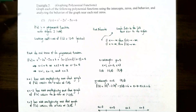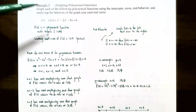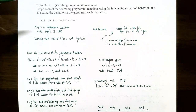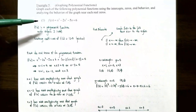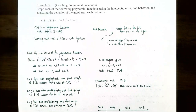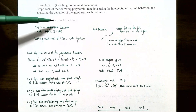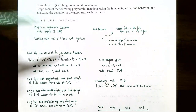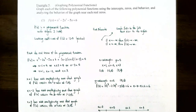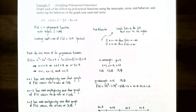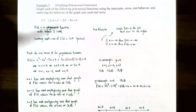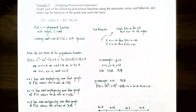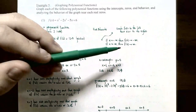Example five: graph f(x) = x³ - 2x² - 5x + 6. First, find the end behavior. The leading term is x³, so the degree is three (odd) and the leading coefficient is one (positive). The ends of the graph have opposite behavior: the graph falls on the far left and rises on the right. Using arrow notation: as x approaches negative infinity, f(x) approaches negative infinity; as x approaches positive infinity, f(x) approaches positive infinity.